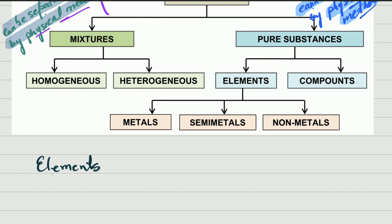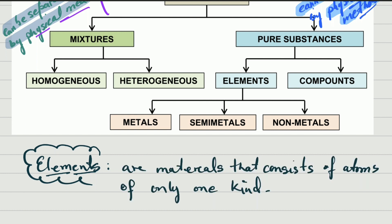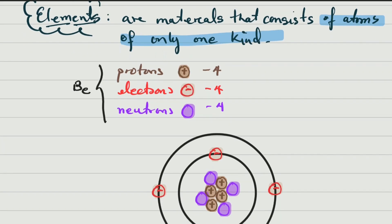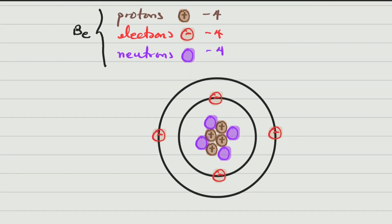We already learned about elements — remember, elements are allocated in the periodic table and can be divided into metals, semi-metals, and non-metals. Elements are materials that consist of atoms of only one kind. Previously we learned how to draw atoms, and here is one example: beryllium. Remember, you have the number of protons, electrons, and neutrons.